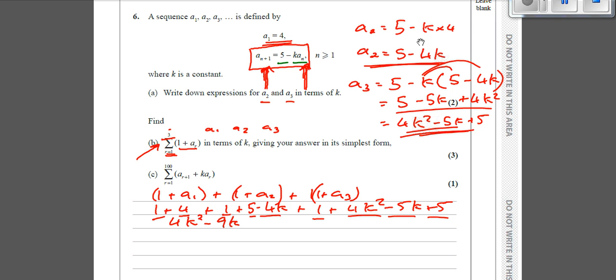plus 1 is 12, plus 5 is 17. So we've got 4k squared minus 9k plus 17. And that's it. That's those three marks.